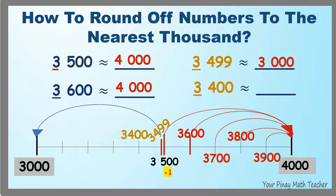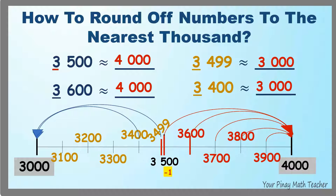Also, 3,400 should be rounded off to 3,000 because it is nearer to 3,000 than 4,000. Likewise, 3,300, 3,200, and 3,100 should be rounded off to 3,000 because they are nearer to 3,000.